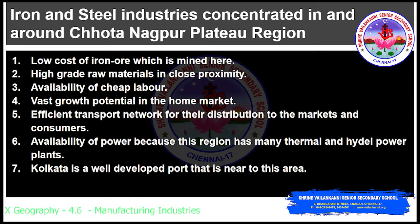Now we will see why iron and steel industries are concentrated in and around the Chotanagpur plateau region. First, low cost of iron ore — iron mines are located in nearby areas. Second, high-grade raw materials in close proximity — coking coal and limestone are available nearby. Third, availability of cheap labor from the adjoining areas of Bihar, Jharkhand, and Odisha in abundance. Fourth, vast growth potential in the home market. Fifth, efficient transport network — the region is well connected with roadways and railways, facilitating movement of raw materials and finished goods.